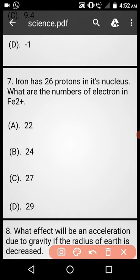Question number 7: Iron has 26 protons in its nucleus. What are the number of electrons in Fe 2 plus? Option A: 22, Option B: 24, Option C: 27, Option D: 29. Answer is Option B, 24.